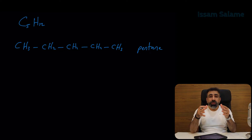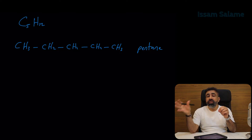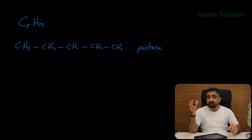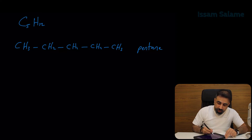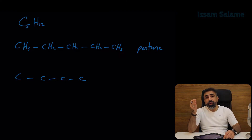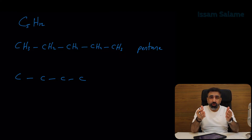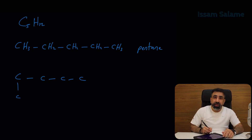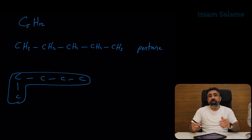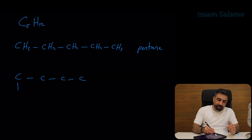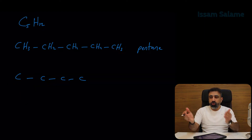To draw the other isomers, keep in mind that isomers must have different names. If you draw another isomer and it has the same name, then it's not an isomer. For example, if we draw four carbon atoms and add the fifth carbon as a substituent at one of the end carbons, the longest chain will still be called pentane — so we cannot add the fifth carbon to one of the end carbons.